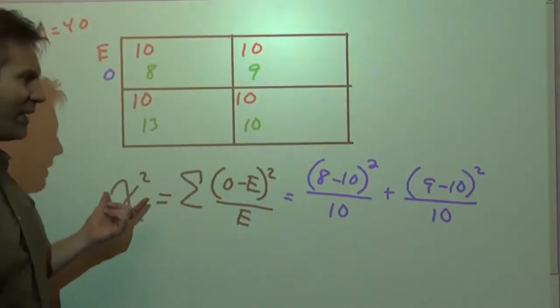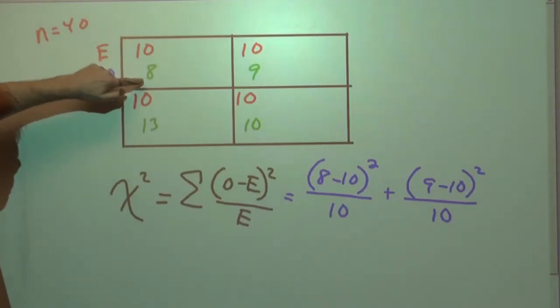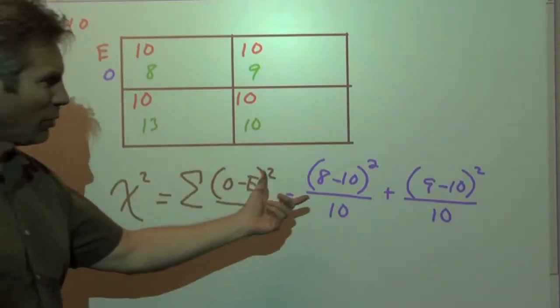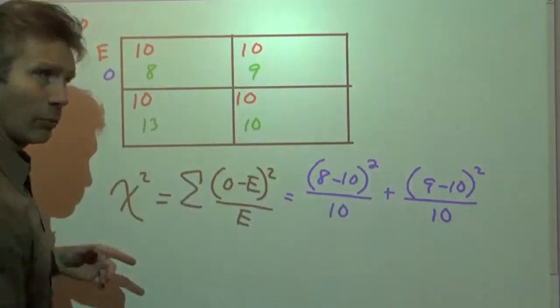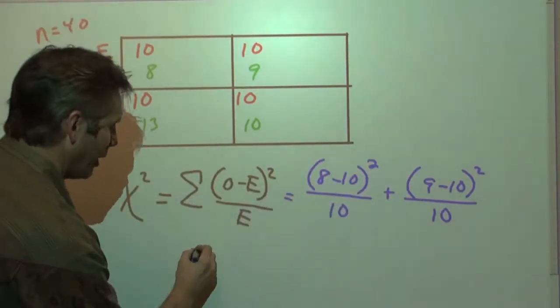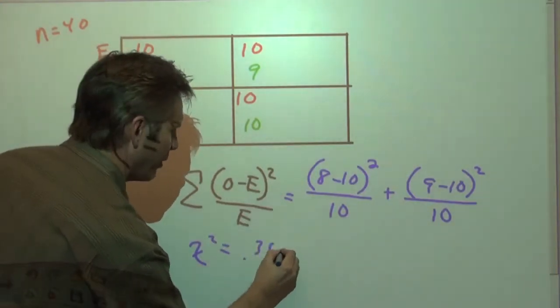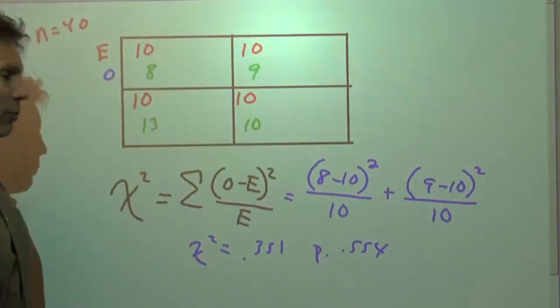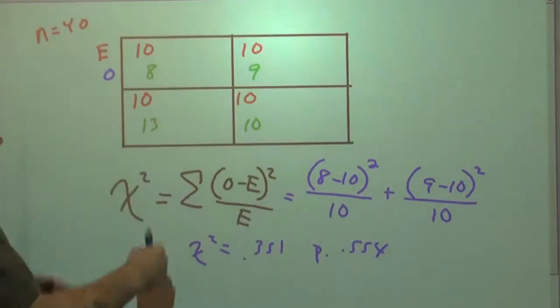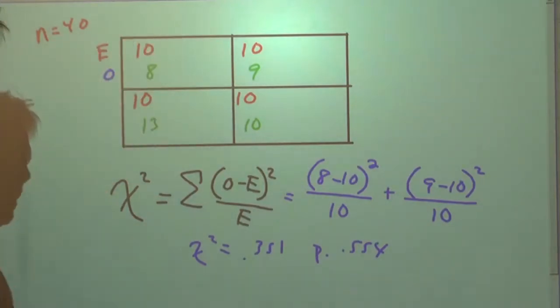So what it takes to get a big chi-squared test statistic is a big difference between the observed and the expected counts. With small differences, we're going to get a small chi-squared value. In fact, if we ran this test, we would end up with a chi-squared statistic that's very small. It would only be 0.351, and the p-value would be 0.554. In other words, the conclusion is, based on the results we got, there's no reason to believe that the distribution is anything other than an even distribution in each cell.